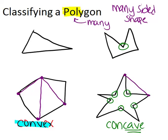By the way, these purple lines I've been drawing are diagonals. That's an important vocabulary word to know about polygons. If you take two non-adjacent vertices and connect them with a line, you've created a diagonal.